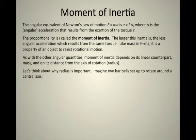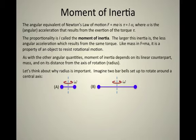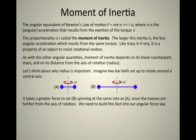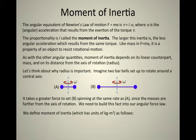Imagine two barbells set up to rotate around a central axis — something like a spinning weather vane. If the two barbells are really close together, it's easy to get that system spinning. But if they're really far apart, it's hard to get that object spinning. It takes greater torque or force to get the far-apart system spinning, and we need to build that into how we calculate moment of inertia.